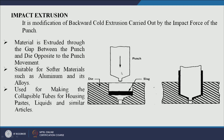Here we can see the die, the punch, and the slug or metal with the necessary openings. When the punch impacts the metal, the metal flows back and follows the space between the punch and the die, taking the shape. The flow of metal in the backward direction opposite to the direction of the punch leads to the backward cold extrusion process.